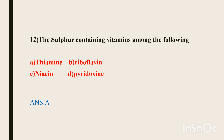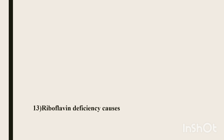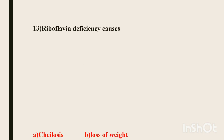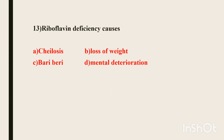Thirteenth question. Riboflavin deficiency causes — Option A: cheilosis, Option B: loss of weight, Option C: beriberi, Option D: mental deterioration. Riboflavin is vitamin B2. Its deficiency causes cheilosis, which involves ulceration, cracking, and chapping of the lips and angles of the mouth.